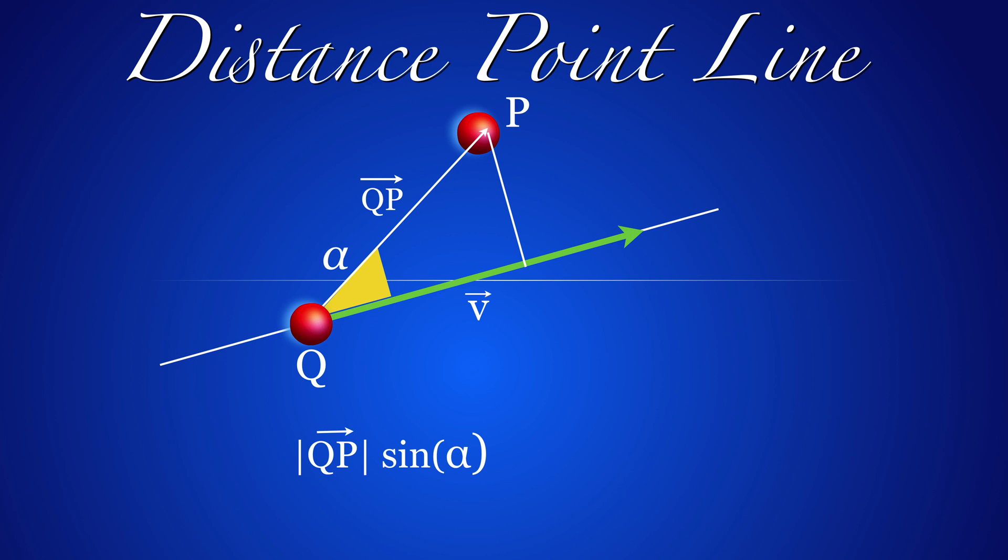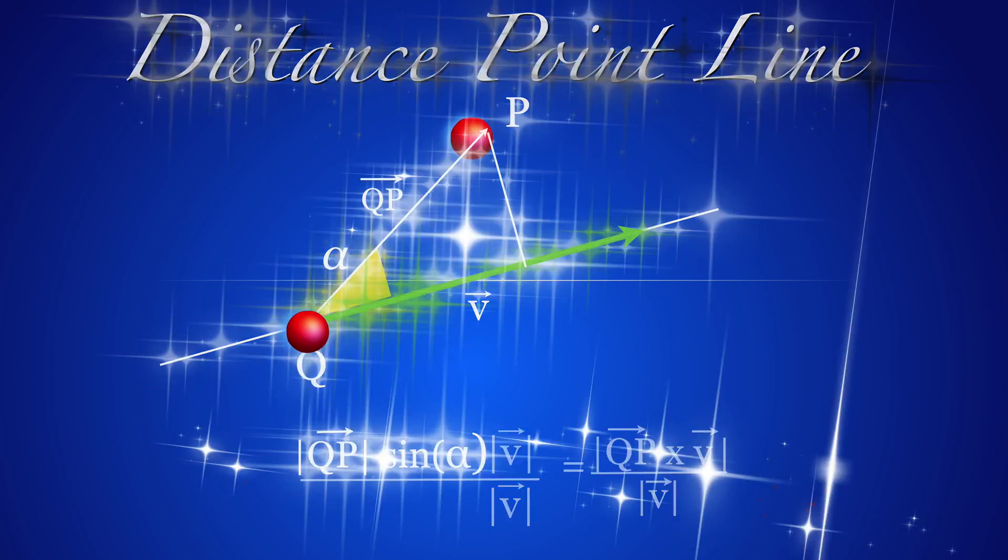By multiplying and dividing simultaneously by the length of V, we can get rid of the sine and get the distance in terms of the cross product.